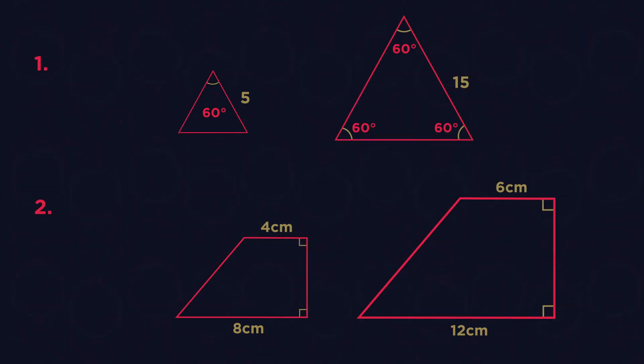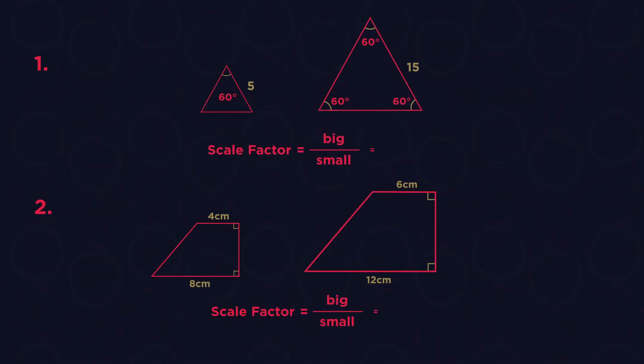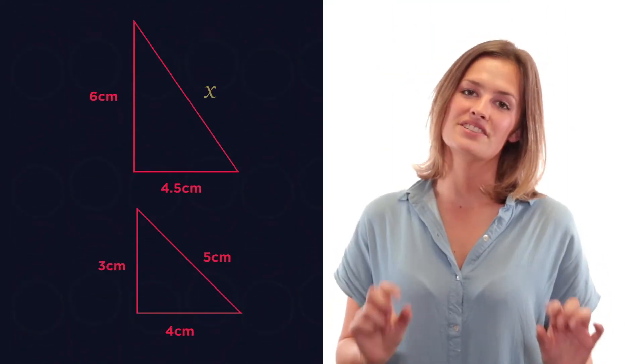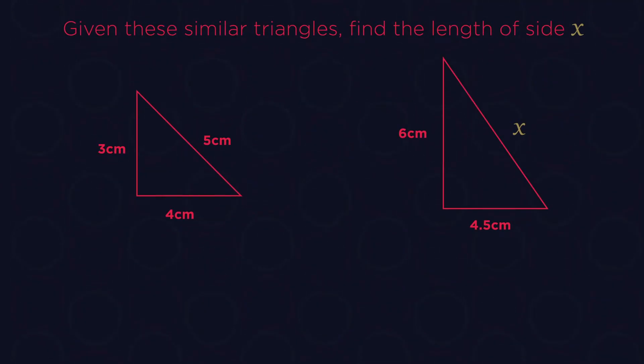What is the scale factor for these similar shapes? Pause the video and work them out. Did you get them right? Make sure that you select the corresponding sides. The question has told us that the triangles are similar even though they look different. The one on the right has been rotated, reflected, and enlarged.